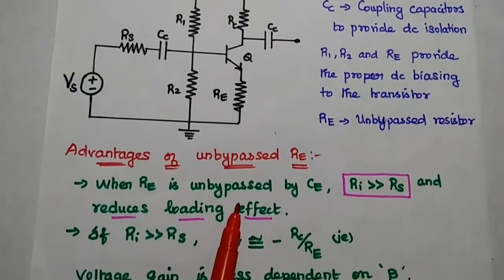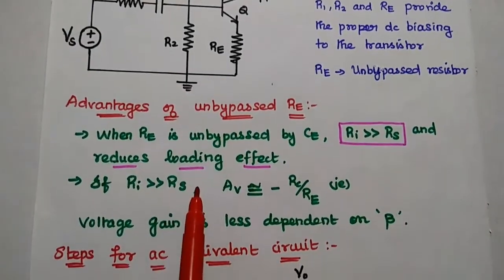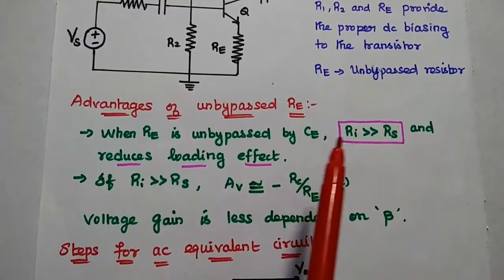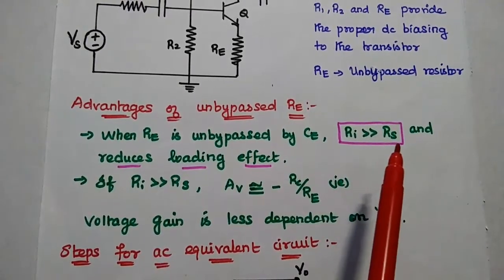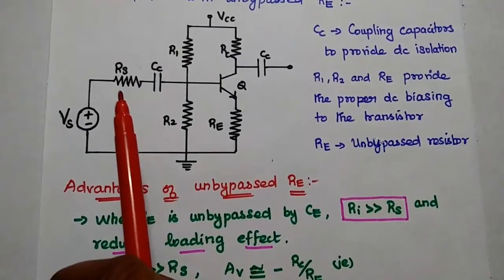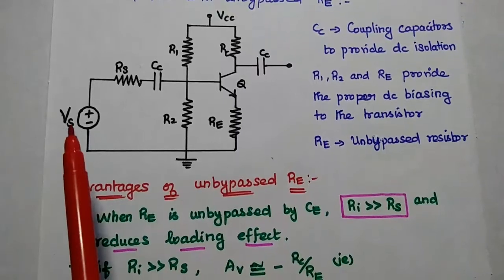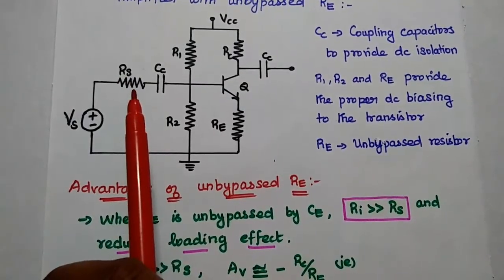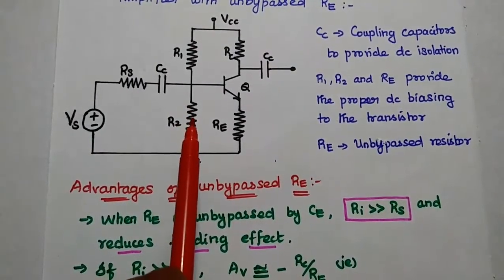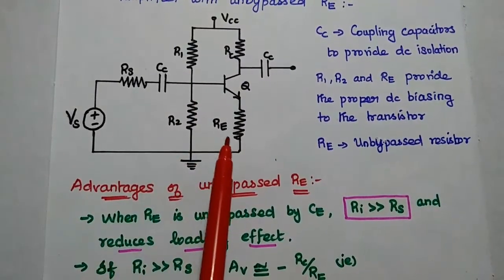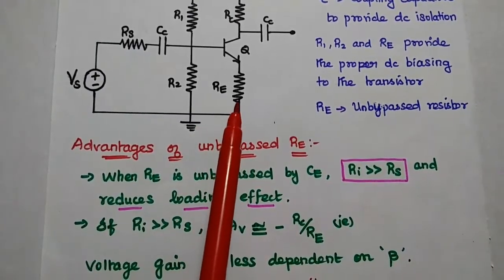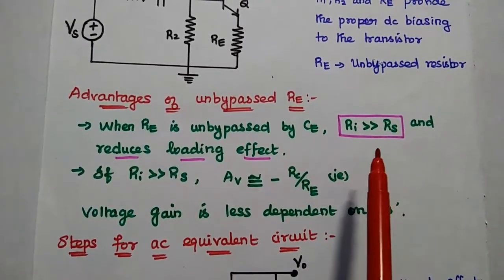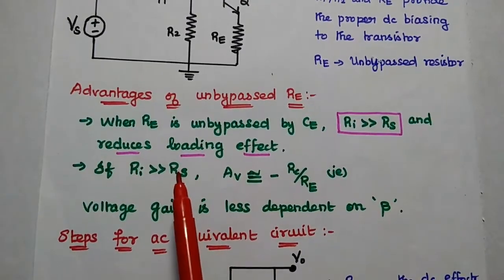The major advantages of this unbypassed resistor are: when this emitter resistor is unbypassed by the emitter capacitor, the input resistance is far greater than the source resistance. The source resistance is connected in series with the source signal, so we have to ensure that the source resistance is always smaller than the input resistance. The input resistance includes the combination of R1, R2, and RE. When the emitter resistor is unbypassed, the input resistance value is far greater than the source resistance, thereby reducing the loading effect.